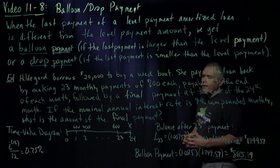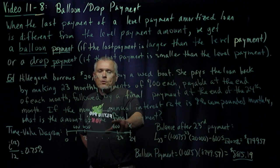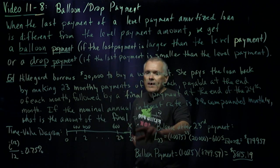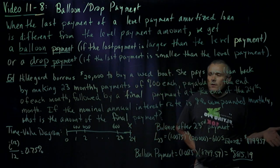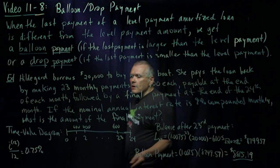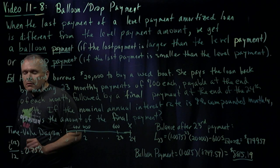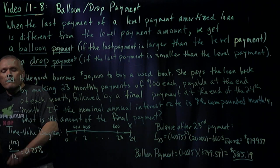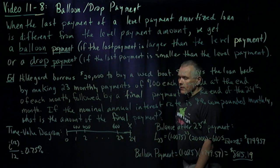Here's our time value diagram. We've got $600 payments up until time 23, and then we get a final payment that needs to be paid off, so the loan balance will be zero when we get to time 24. We also need to know our period interest rate. We're given that nominal annual rate of 9%, convert it by dividing it by 12 to a 0.75% interest rate.